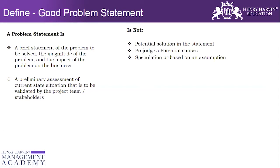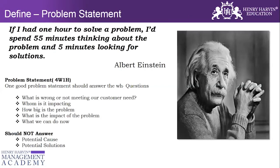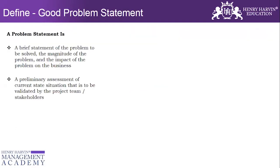What are the things we should not mention in the problem statement? We should not mention the potential solution. If I have some hypothesis or think this could be the potential solution, I should hold it to myself because this is a Six Sigma project. We should also refrain from mentioning potential causes or any speculation based on assumption. A problem statement should only talk about the problem, and it should have four W and one H.